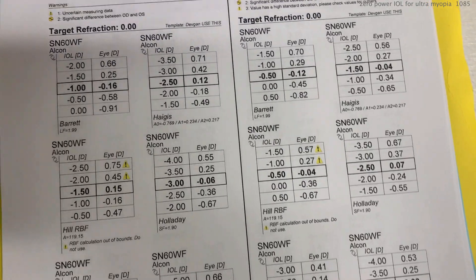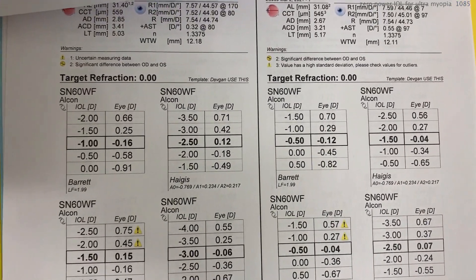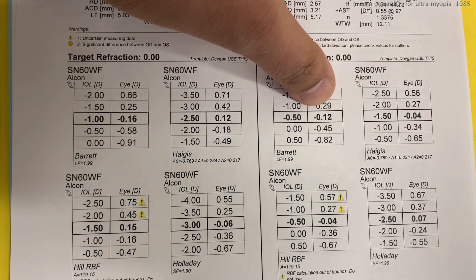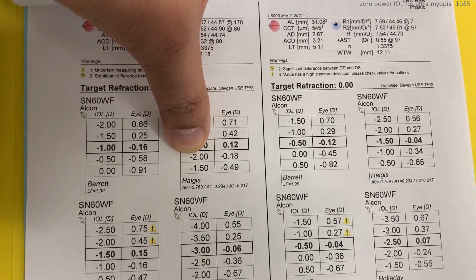Looking at the calcs, you can see they come up with an estimate of minus one for the right and minus a half for the left. But we're not going to use that. As we explained, you don't want to aim for plano on these very myopic patients — you want them to be a little myopic. If you aim for plano and they end up a little hyperopic, they'll be upset. But if you go from minus 20 and end up at minus one or minus two, that's an incredible outcome. The patients are very happy, and a mild degree of myopia is a gift — you want to keep it as such.